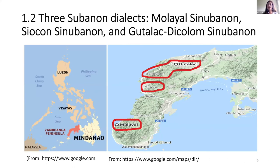The language has three areal dialects: Malayal Sinubanon, Shokon Sinubanon, and Gutalak-Dikolam Sinubanon. I speak the Malayal Sinubanon. There are two maps on this slide. On the left is the Philippine map highlighting the location of Zamboanga Peninsula. Within Zamboanga Peninsula we can find the word areas where the three dialects of Subanon are spoken. One is in Malayal, my home place. Another is in Shokon. The other one is in Gutalak-Dikolam.